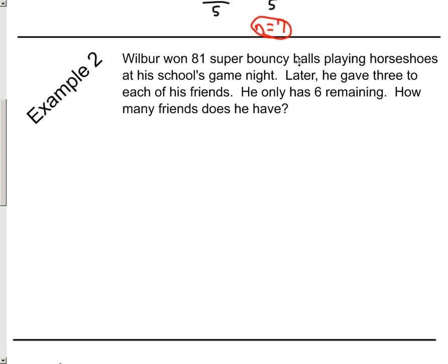Let's just take a look at this. Wilbur won 81 super bouncy balls playing horseshoes at his school's game night. Later, he gave three to each of his friends. He only has six remaining. How many friends does he have? So, here's little Wilbur, okay? And he won 81 bouncy balls, okay? So, I'm going to write this down. That takes care of this. Later, he gave three to each of his friends. So, he's going to give away. That's like a subtraction. He gives three to each friend. So, that takes care of this sentence right here.